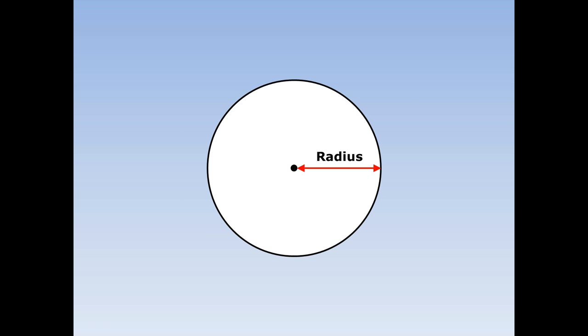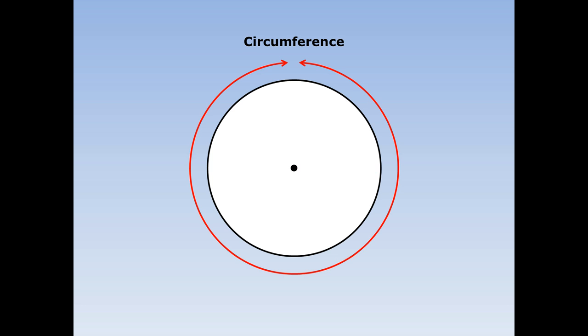The distance from the center to the outside is called the radius. The radius is half the diameter. The distance all the way around the outside of the circle is called the circumference — it's the perimeter of a circle.